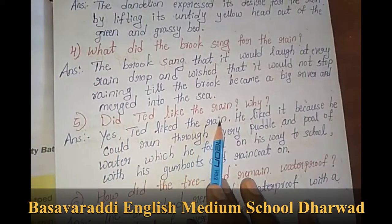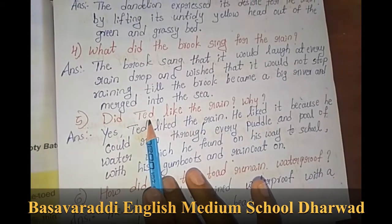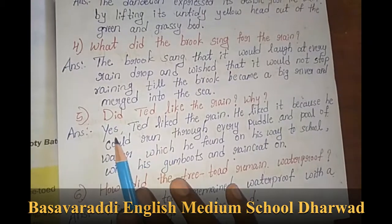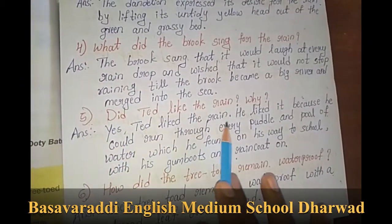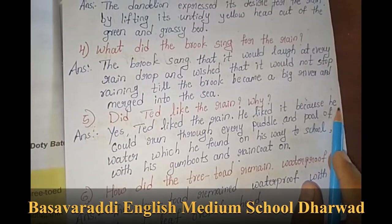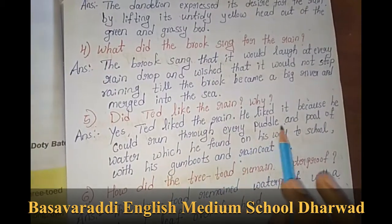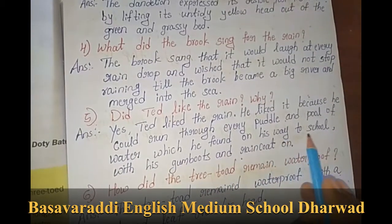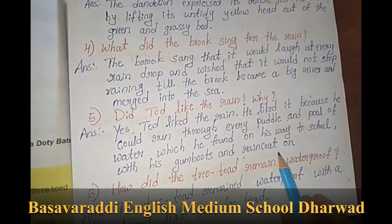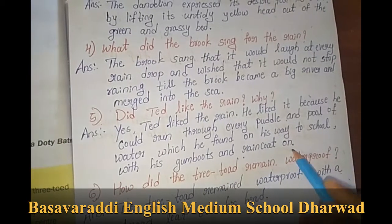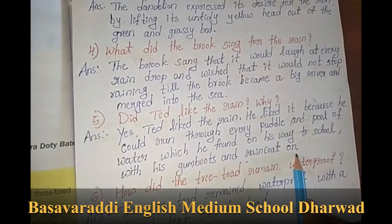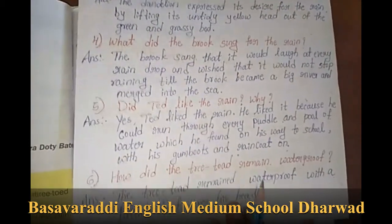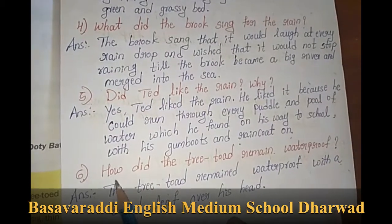Fifth question: did Ted like the rain? Why? Yes, Ted liked the rain. He liked it because he could run through every puddle and pool of water which he found on his way to school, with his gumboots and raincoat on.